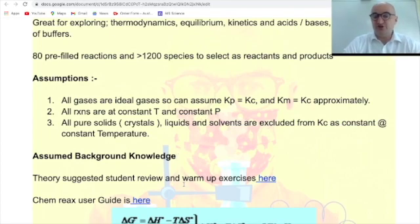All reactions are at constant temperature and constant pressure, which is why we can assume that Kp equals Kc. It doesn't say solid, it will say crystals, and crystals just means that they are pure solids. Liquids and solvents are excluded because it's at constant temperature. There are notes on the site for you to have a look at to explain this further.